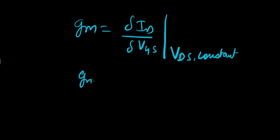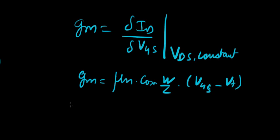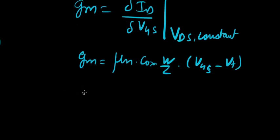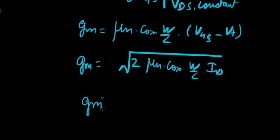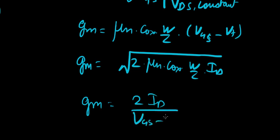GM is also equal to mu n times c ox times w over l times VGS minus VT. Forgive me for my bad handwriting please. GM is also equal to root of 2 times mu n times c ox times w over l times ID. GM is also equal to 2 times ID over VGS minus VT.